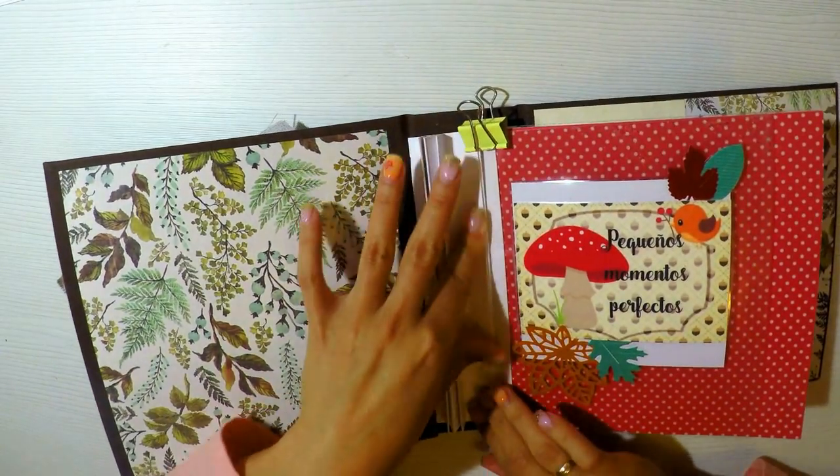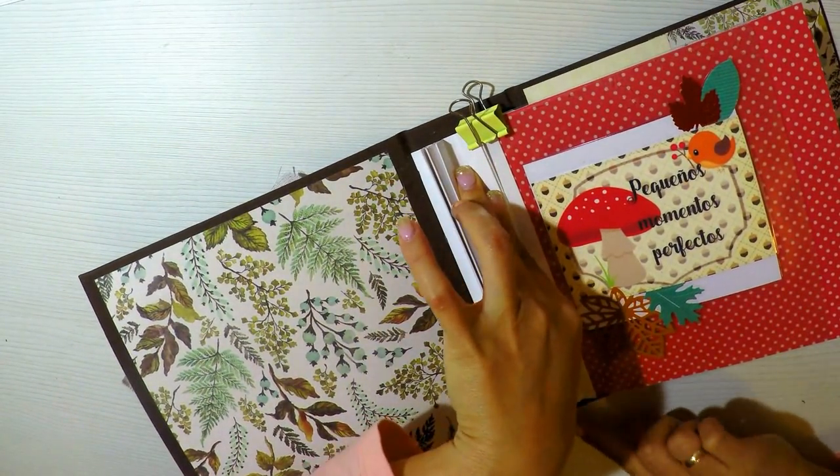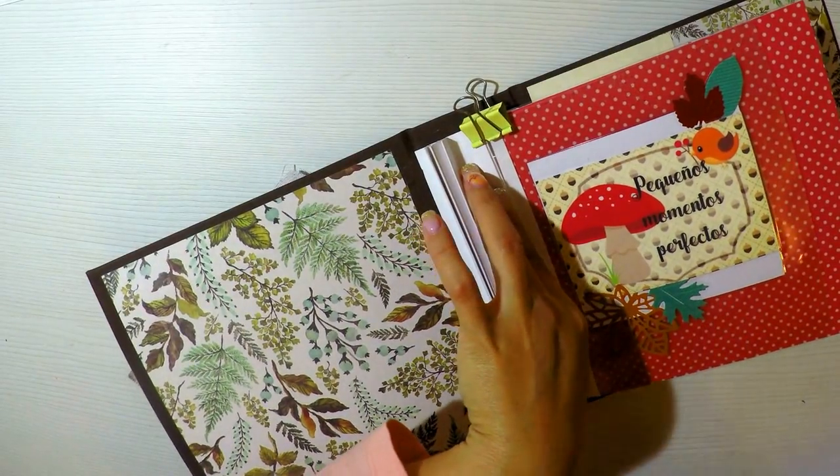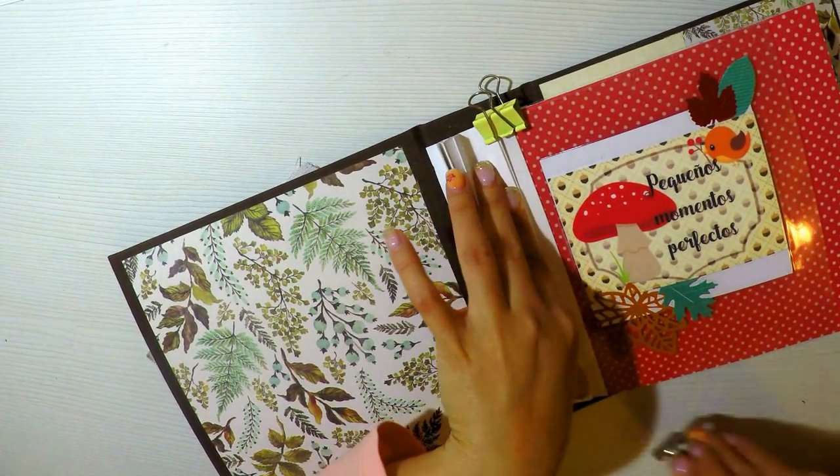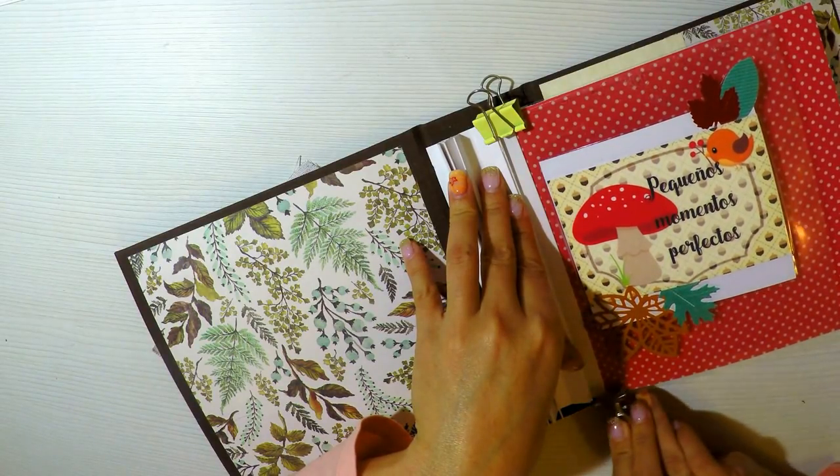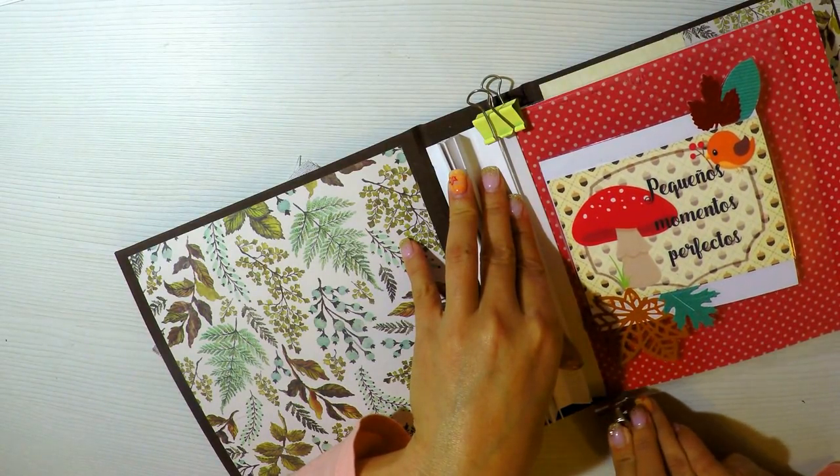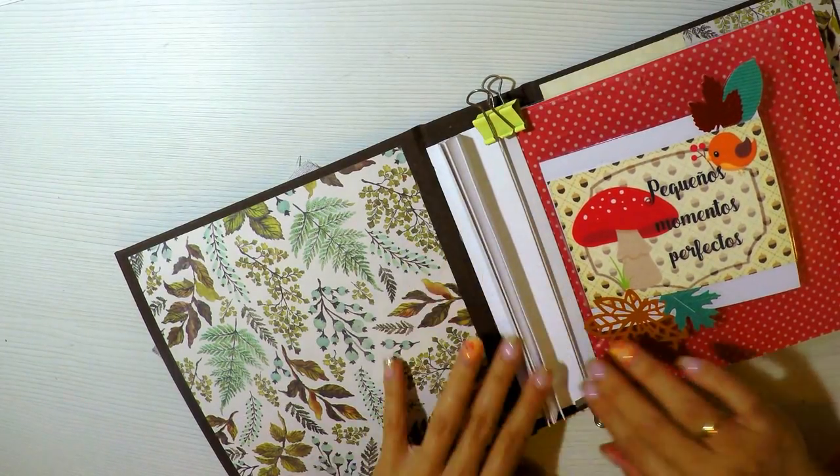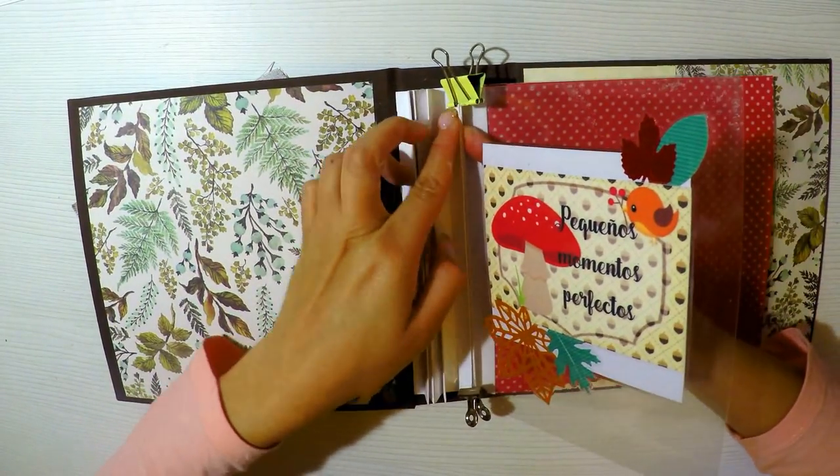Como les decía anteriormente, para colocar el acetato debería de poner unas pinzitas y estar muy pendiente porque lo que es la transparencia queda bastante difícil de pegar. Entonces tengo que estar hasta que se seque. Voy a colocar una pinzita tanto arriba como abajo y mientras tanto me voy a ir pegando la siguiente.